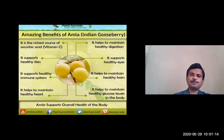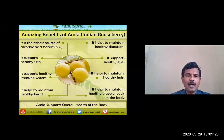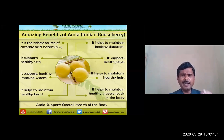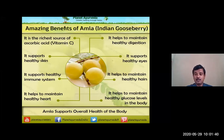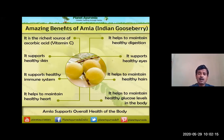The amazing benefits of Amalaki (Indian Gooseberry): it is the richest source of vitamin C. It can be given from bala to vruddha. It supports healthy skin, nourishes all dhatus performing rasayana karma, and supports immunity. Amalaki is the best vayasthapana dravya which improves immunity power and helps maintain a healthy heart.